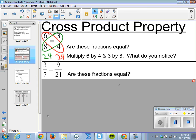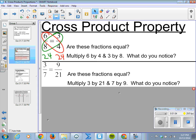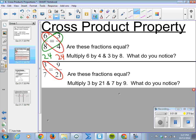Now, what if we multiply diagonally? Multiply 3 by 21, gives us 63, and we multiply 9 by 7, again, gives us 63. These fractions, therefore, are equal.